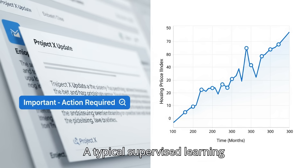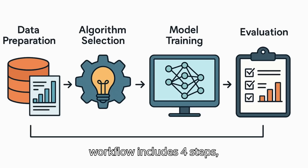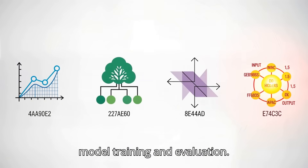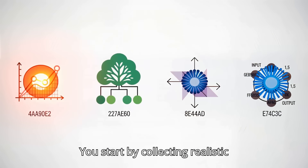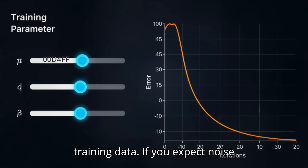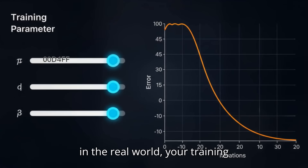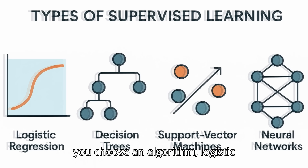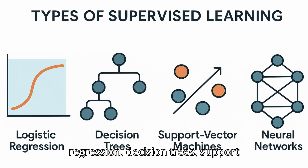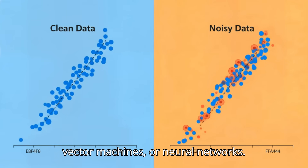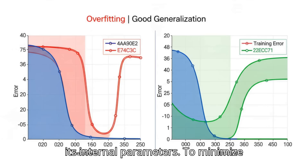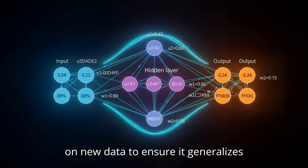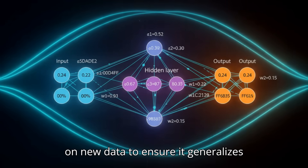A typical supervised learning workflow includes four steps: data preparation, algorithm selection, model training, and evaluation. You start by collecting realistic training data — if you expect noise in the real world, your training data should include it too. Then you choose an algorithm: logistic regression, decision trees, support vector machines, or neural networks. During training, the algorithm adjusts its internal parameters to minimize errors. Finally, you validate the model on new data to ensure it generalizes well and doesn't overfit.